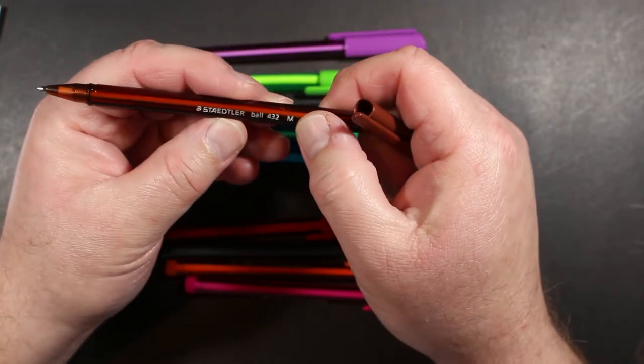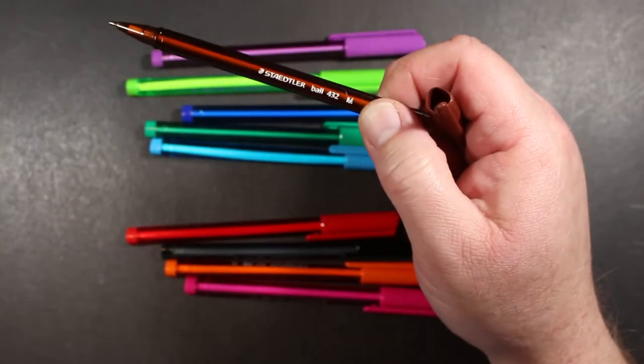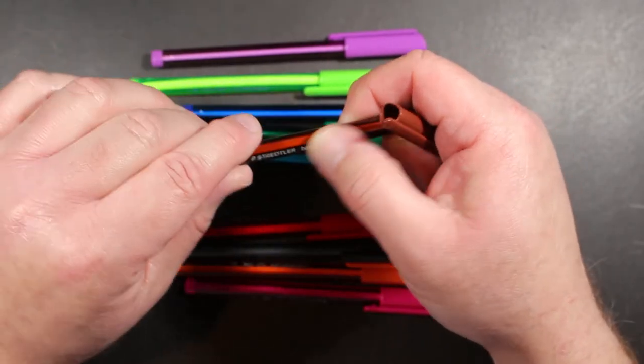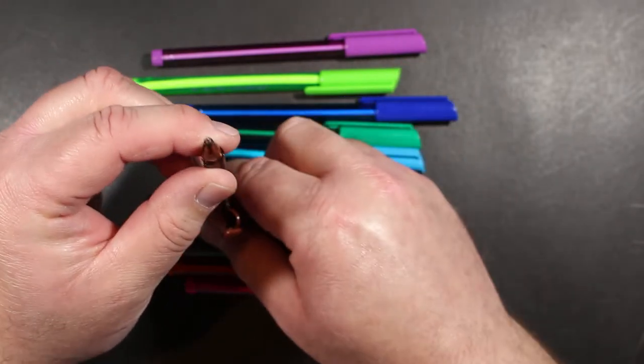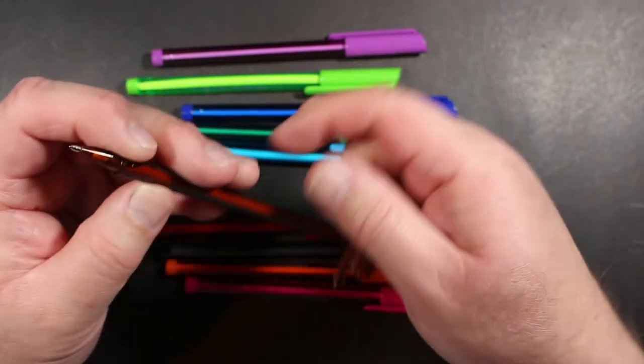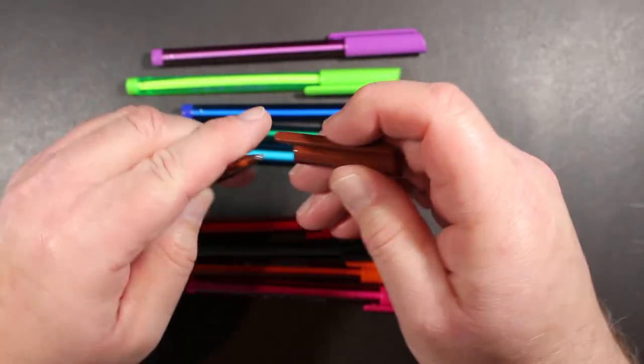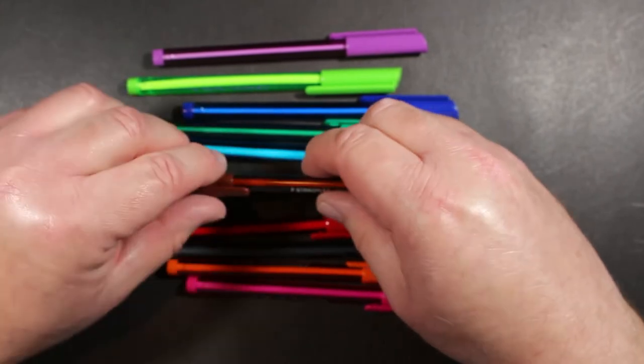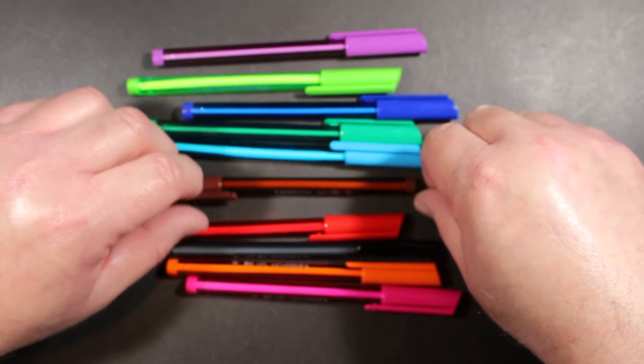It does say medium. Didn't say so on the package, I don't think. But here on the pen, there's an M. And I'll assume that means medium. And here's the tip. So let me get some paper. And we will get writing with these Staedtler ballpoint pens for number 432.